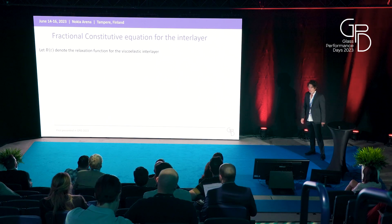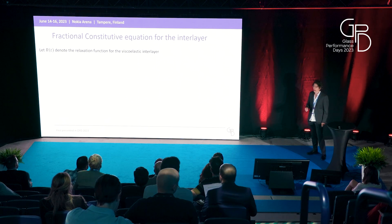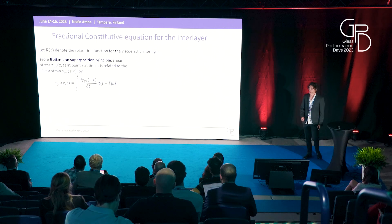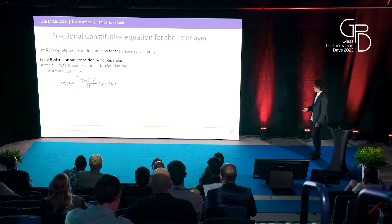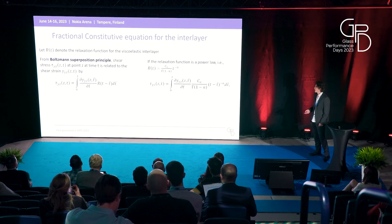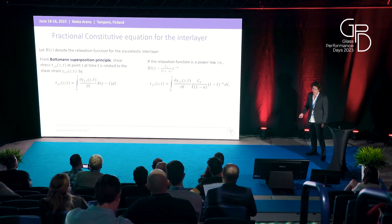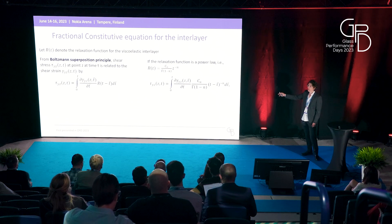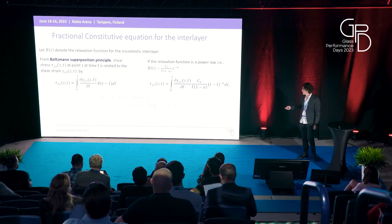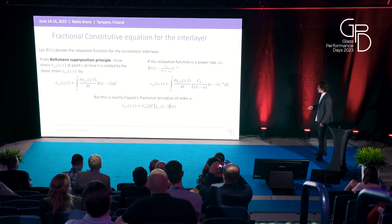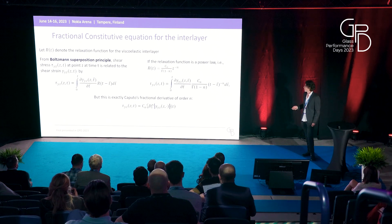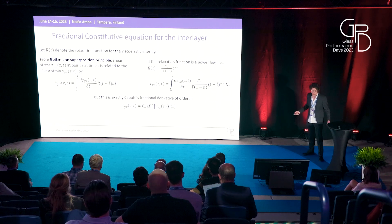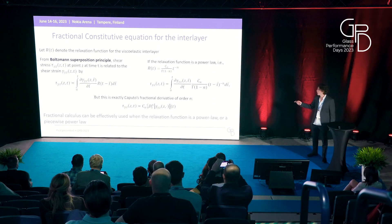Now we can write the fractional constitutive equation of the interlayer. Let R denote the relaxation function. From Boltzmann's superposition principle, we write an equation linking the shear stress and shear strain of the interlayer. Supposing our relaxation function is described by a power law, we substitute it into Boltzmann's superposition principle. We can recognize the Caputo fractional derivative definition, so our constitutive equation becomes: τ = C · D^n(γ), where τ is the shear stress and D^n is the fractional derivative of the shear strain. This expression can also be extended to a piecewise function.